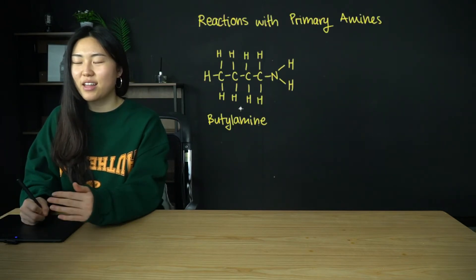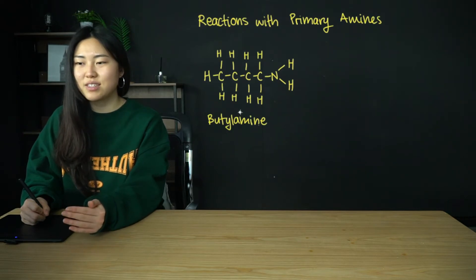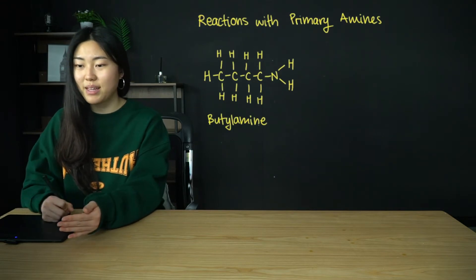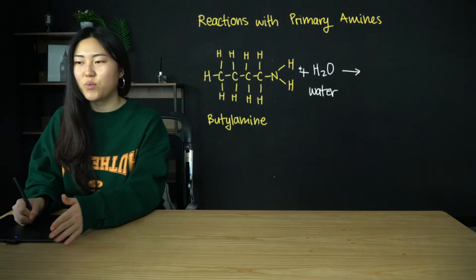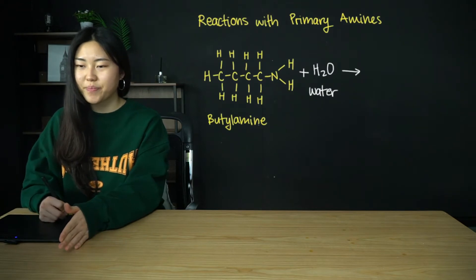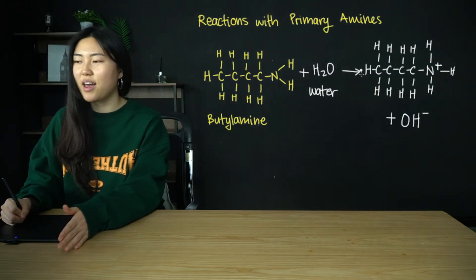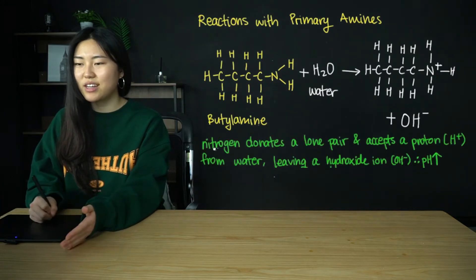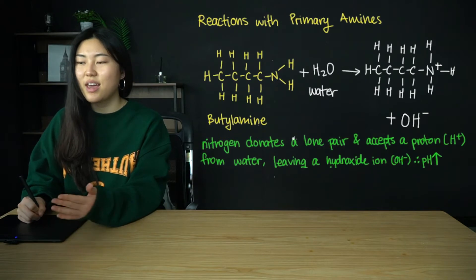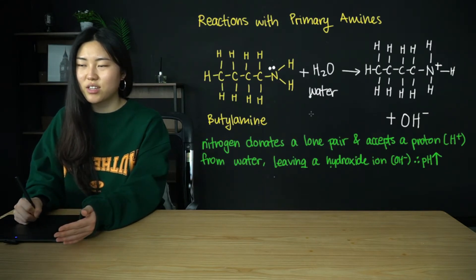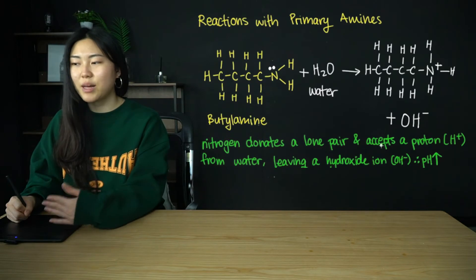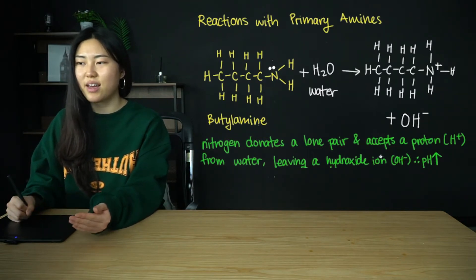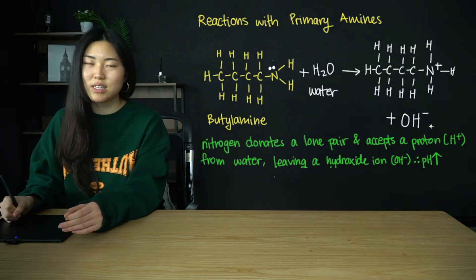We're going to look at the reactions with primary amines first. The example mentioned in the syllabus is butylamine. When butylamine reacts with water, we get this ionic form with a hydroxide ion. The nitrogen donates a lone pair and accepts a proton from the water, leaving a hydroxide ion, which leads to an increase in pH.